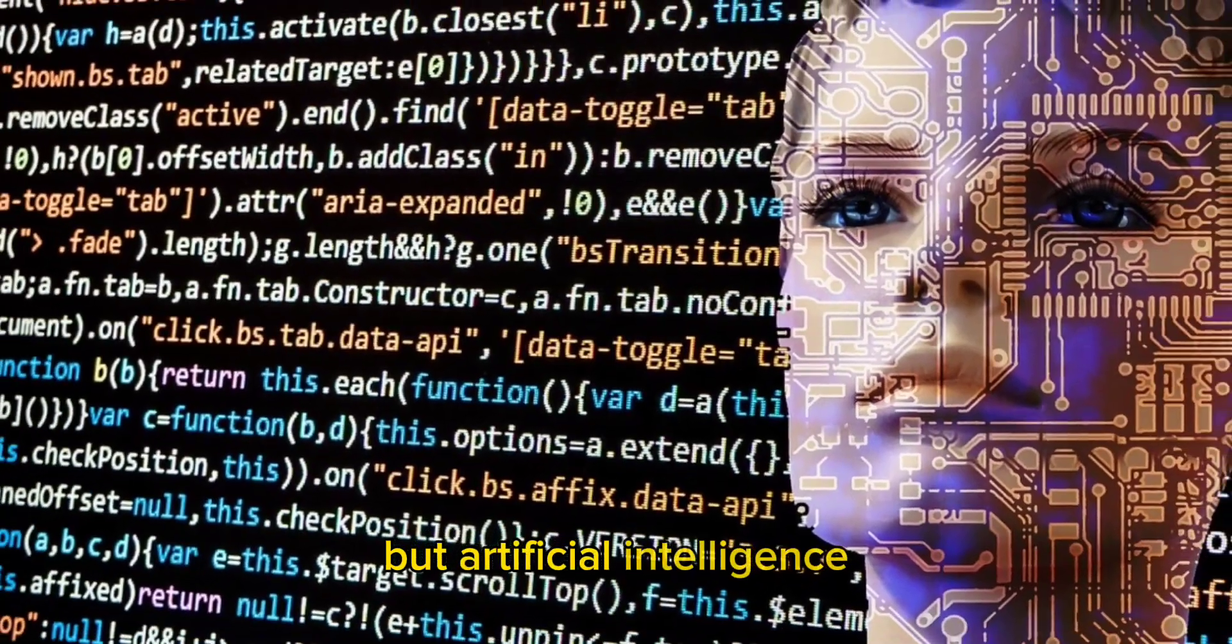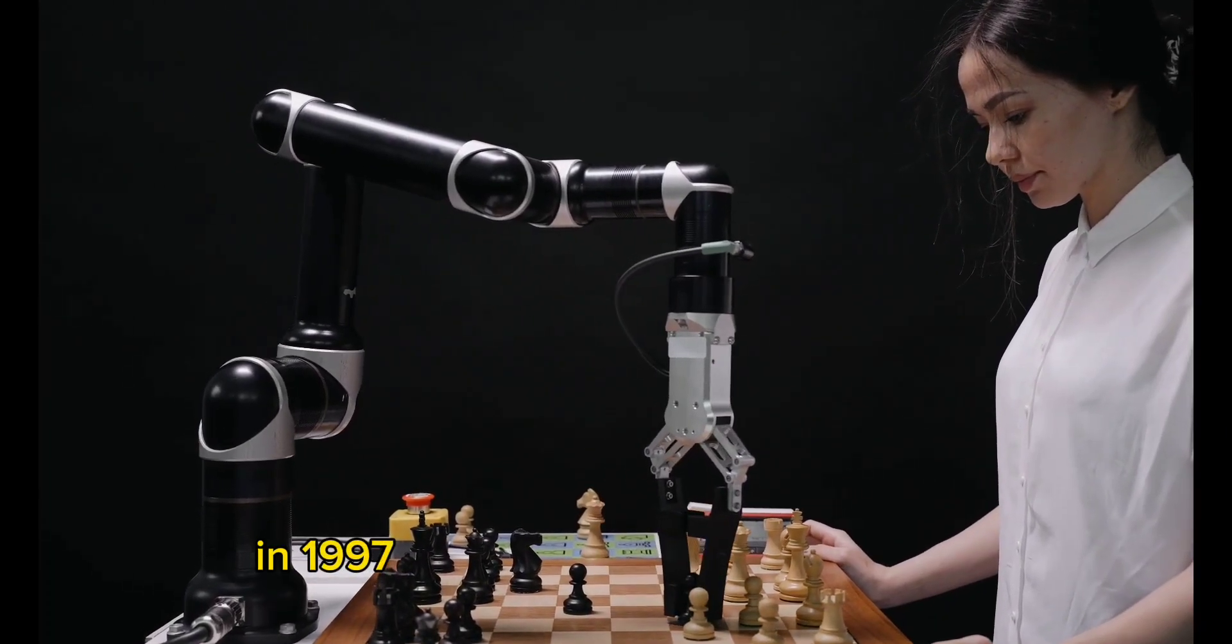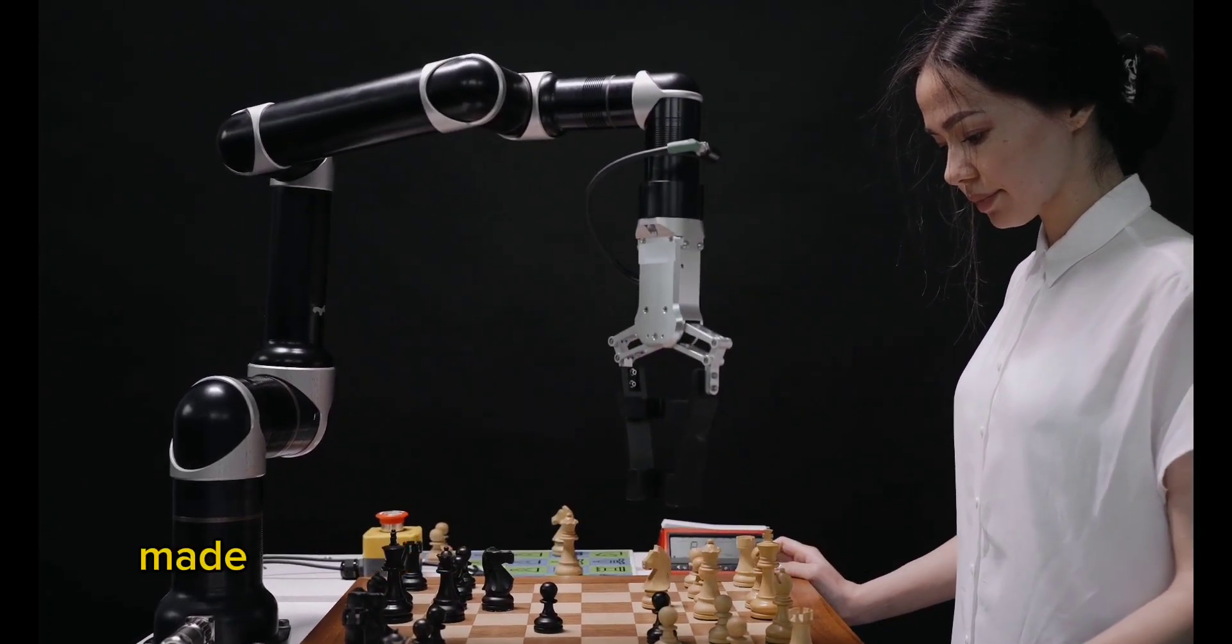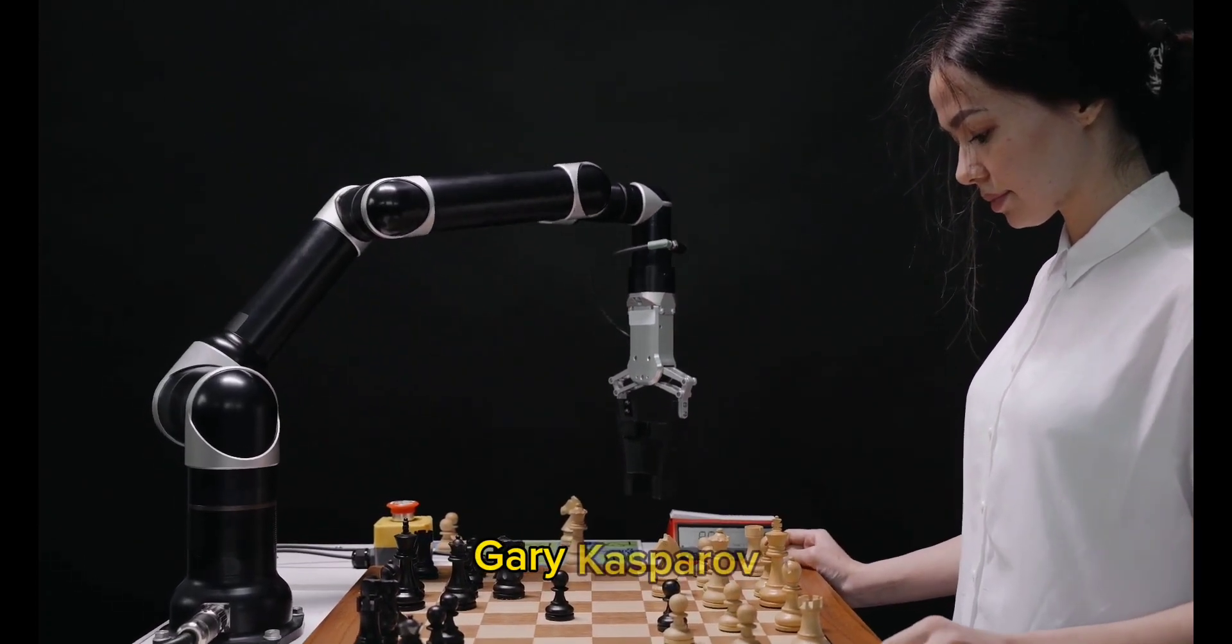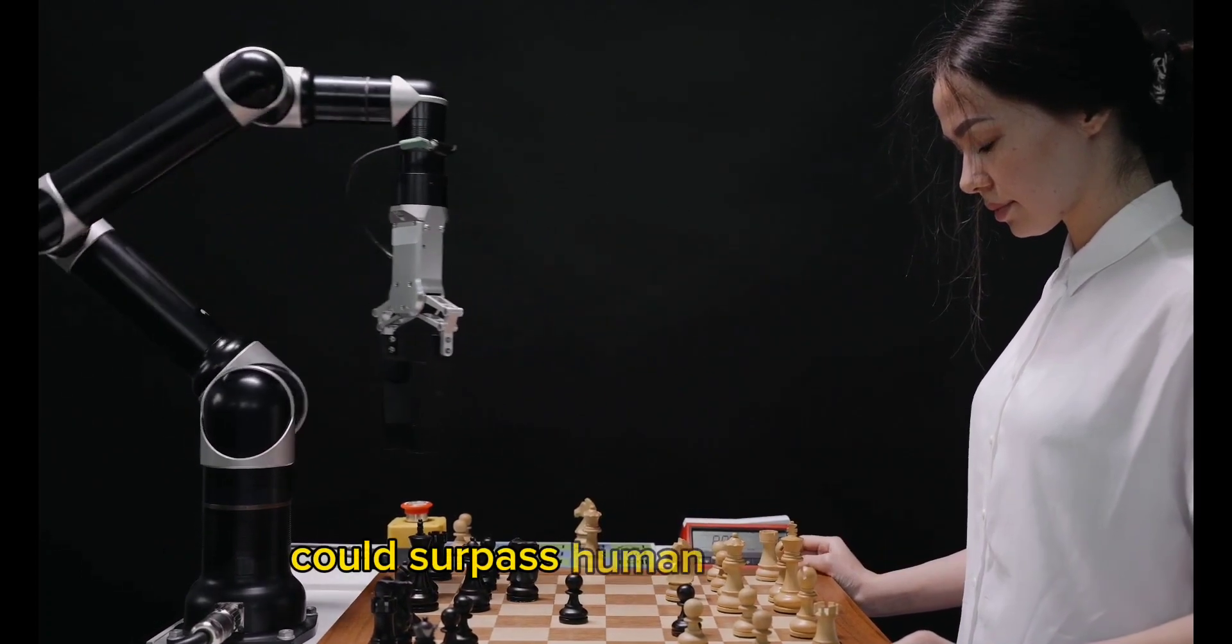But artificial intelligence can learn to play chess in a very short time. In 1997, IBM's AI computer Deep Blue made history by defeating world chess champion Garry Kasparov. This was the first sign that artificial intelligence could surpass human intelligence.